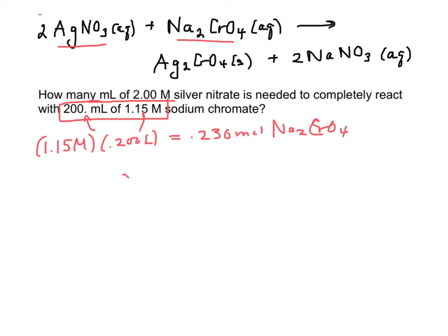So now we're going to go ahead and change moles of sodium chromate to moles of, what is it we're looking for? Silver nitrate. Again, that's going to be a 2 to 1 ratio. So this becomes 0.460 moles of silver nitrate.